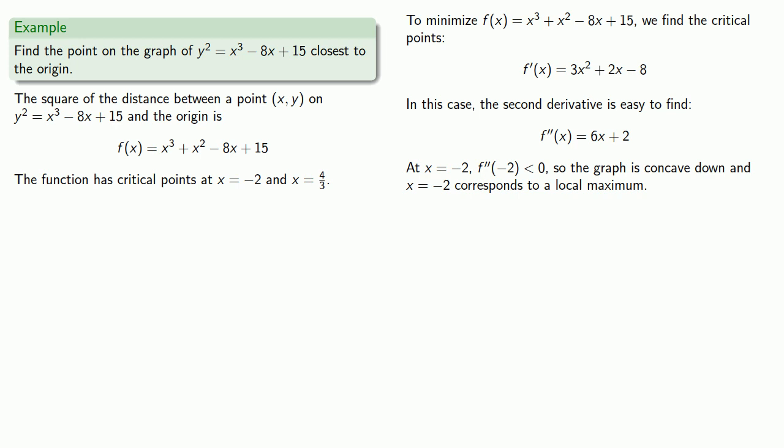At x equals 4 thirds, our second derivative is greater than zero. So the graph is concave up, and so x equals 4 thirds corresponds to a local minimum.